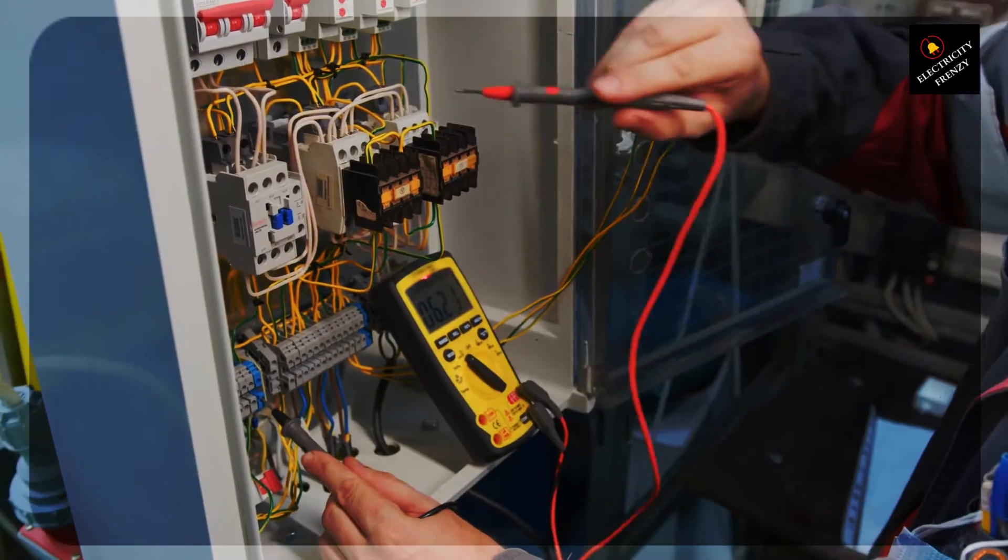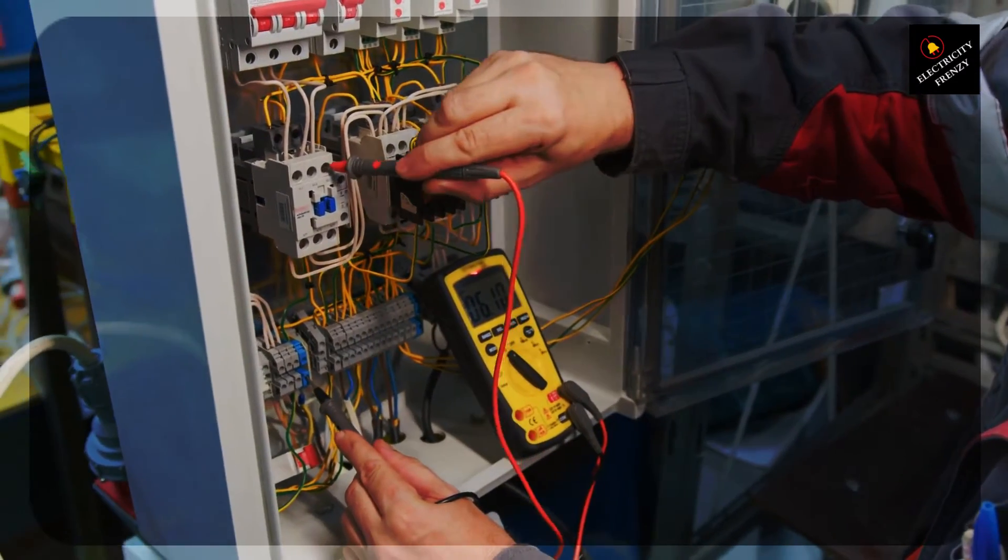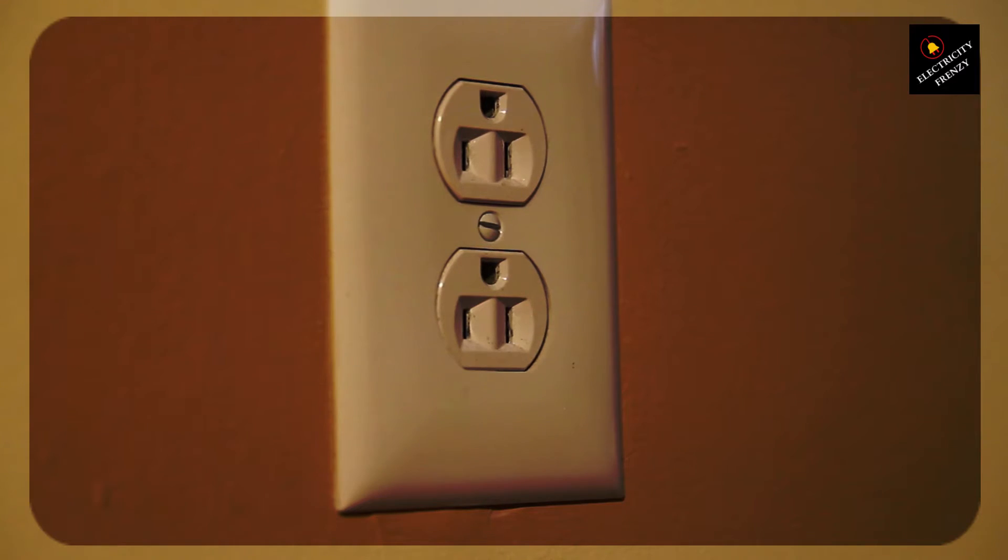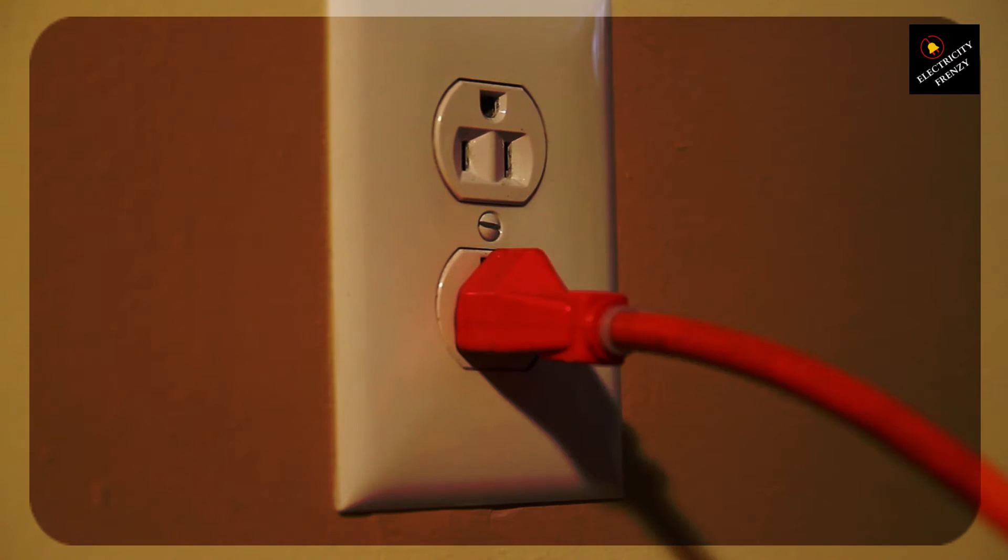Appliance isolation method. By testing different appliances in the same outlet, or the same appliance in different outlets, you can determine whether the issue is with the appliance itself or a specific part of your home's electrical system.